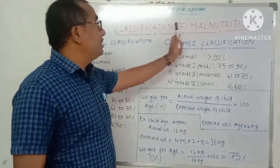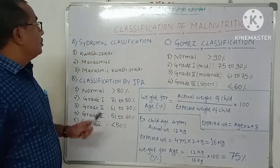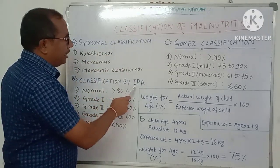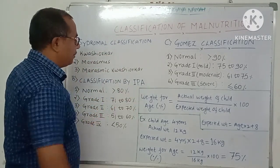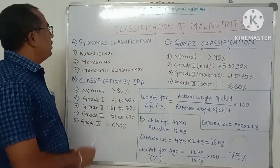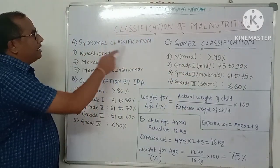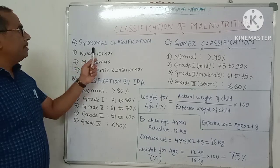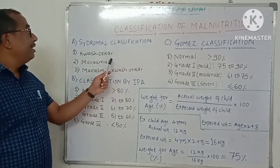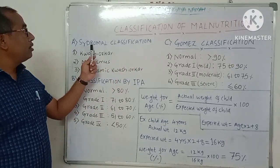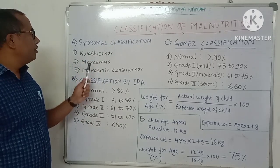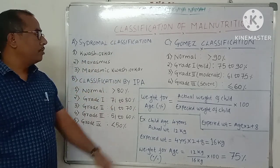Other classifications of malnutrition include syndromal classification, classification by the Indian Pediatric Academy, and Gomez classification. Syndromal classification is based on the group of signs and symptoms — that is, based on syndromes. It is classified into Kwashiorkor, Marasmus, and Marasmus-Kwashiorkor.